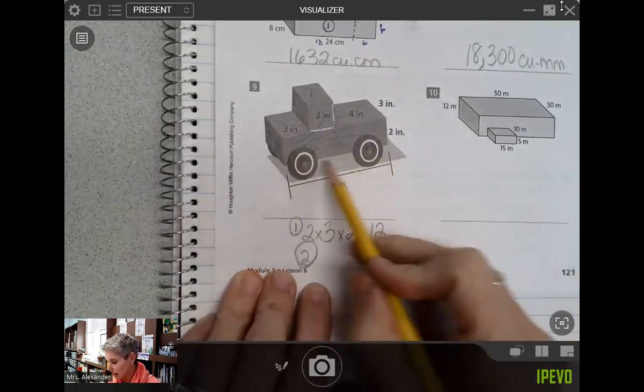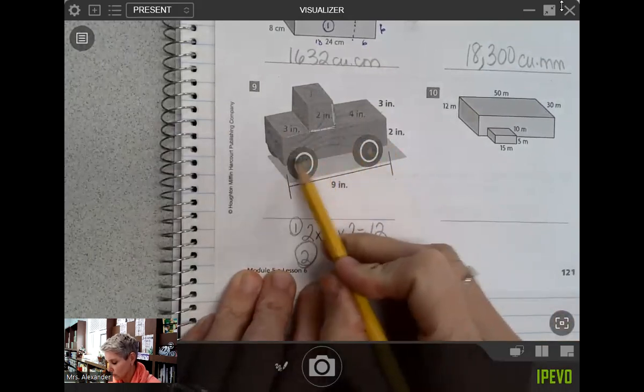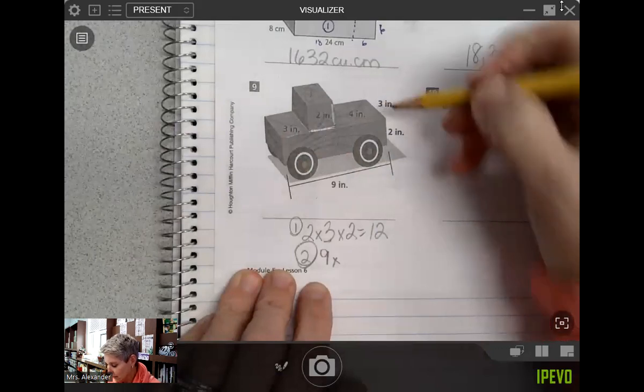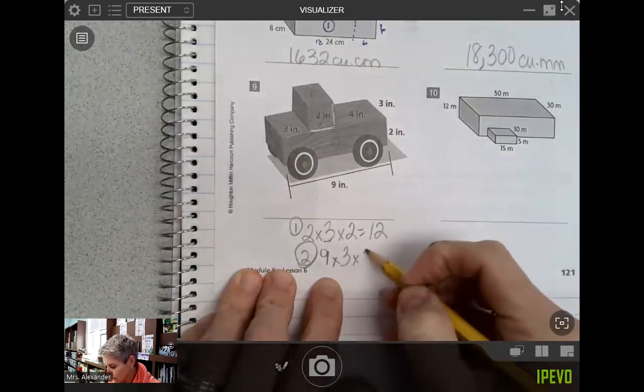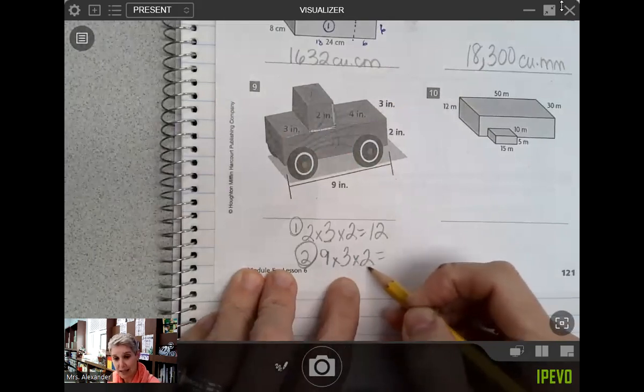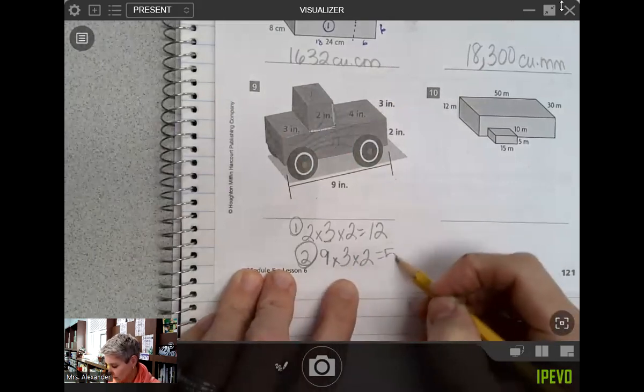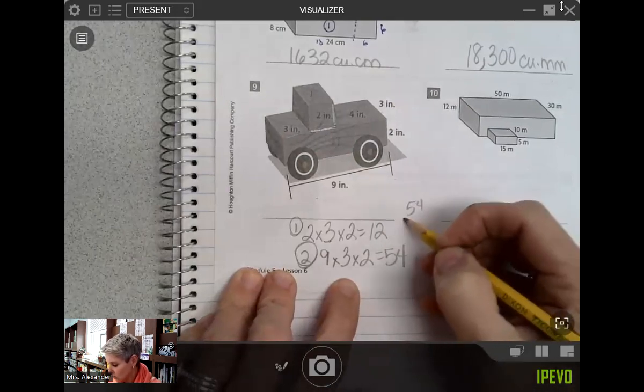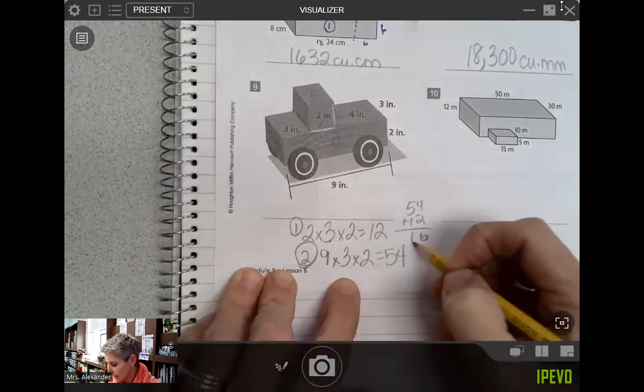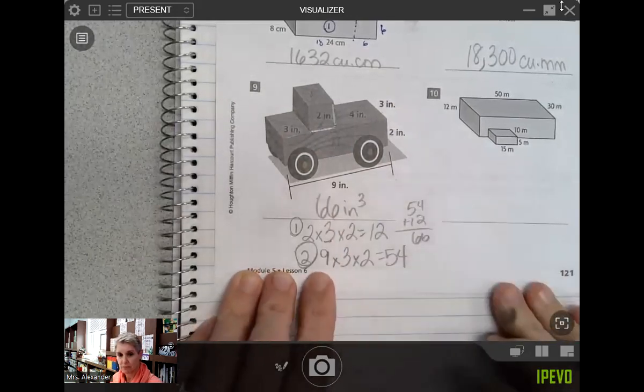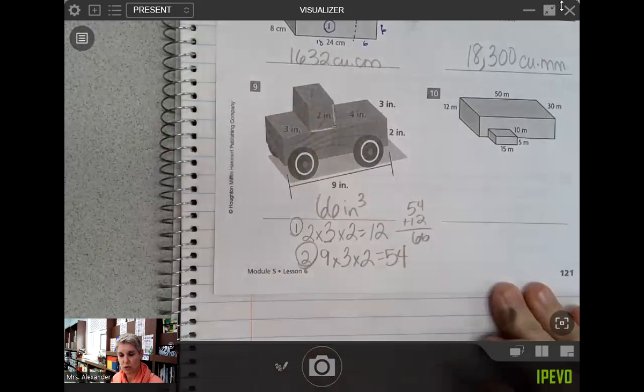And then for this bottom figure that I called figure 2, I have a length of 9, a width again of 3, and a height of 2. So I'm going to do 3 times 2 is 6, 6 times 9 is 54. When I add 54 plus 12, I'm going to get 66 cubic inches there. That one we had some smaller numbers to work with.